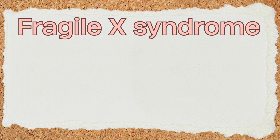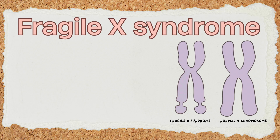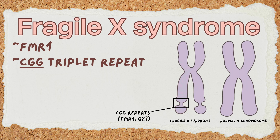Fragile X is caused by a change in the FMR1 gene. At one end of this gene, a three-letter DNA code — CGG — is repeated over and over. Normally, this repeat happens a small number of times. In Fragile X, however, this repeat expands to an unstable and sometimes very large number.